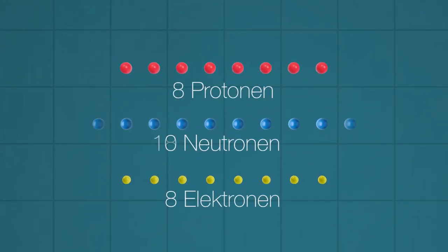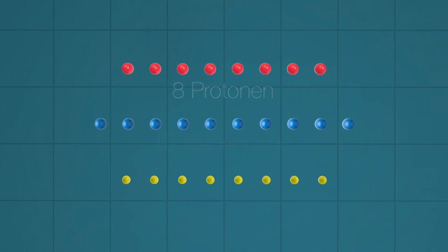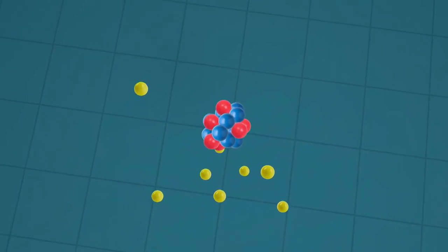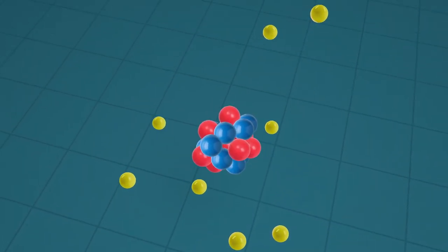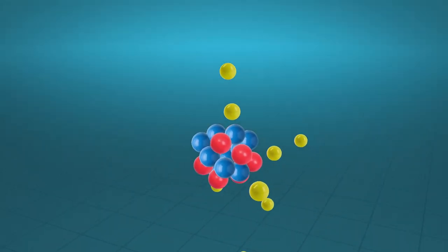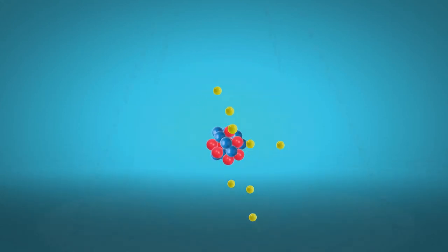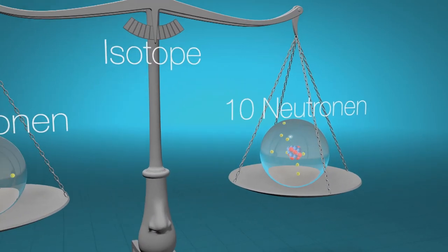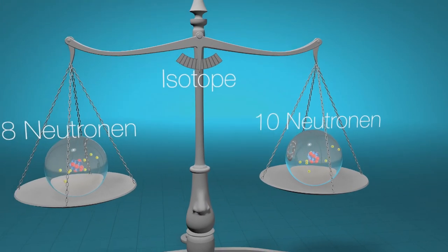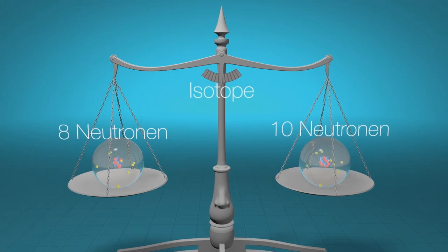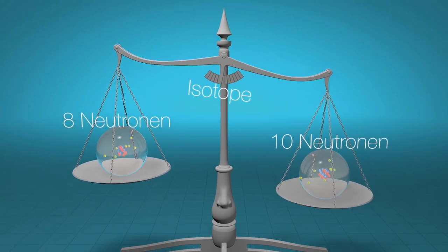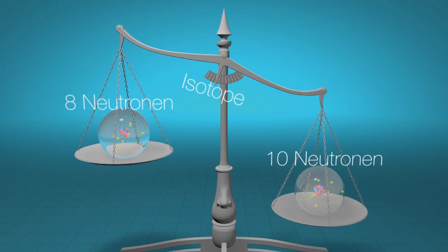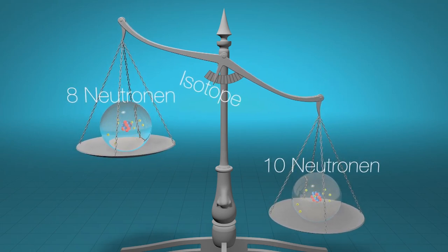Doch der Atomkern eines chemischen Elementes kann verschiedene Neutronenzahlen haben. Dieses chemische Element kann acht oder zehn Neutronen enthalten – es gibt also zwei Isotope dieses Elements. Legen wir das Atom mit zehn Neutronen und das Atom mit acht Neutronen auf eine Waage, sehen wir einen Unterschied in dem Atomgewicht, genannt die Masse. Das schwere Isotop zeigen wir in Schwarz und das leichte Isotop in Weiß, doch beide Isotope sind dasselbe chemische Element.